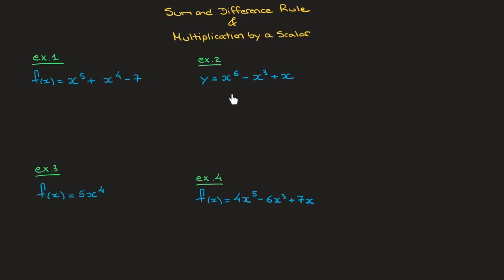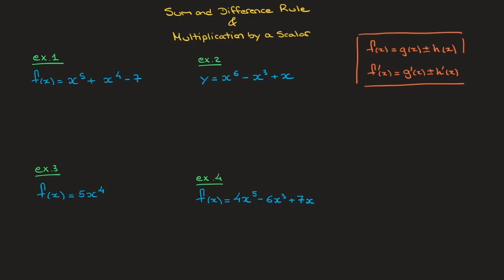For the first two examples, here's the rule we need to know. If a function f of x is equal to the sum or the difference of two functions — g of x plus or minus another function h of x — then its derivative f'(x) is equal to the sum or the difference of the derivatives of those same two functions. In other words, it's equal to g'(x) plus or minus h'(x). This result is known as the sum and difference rule.